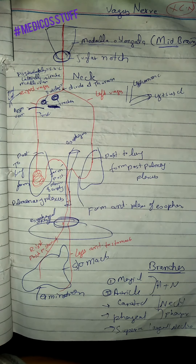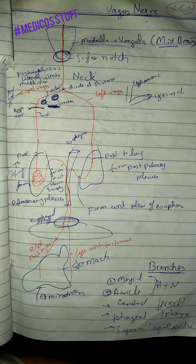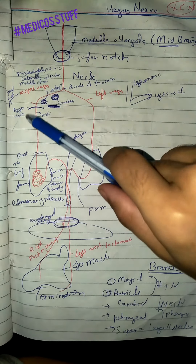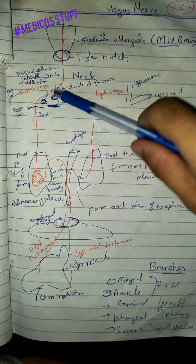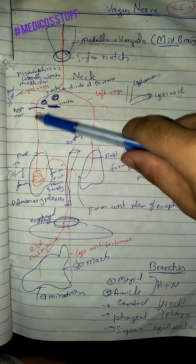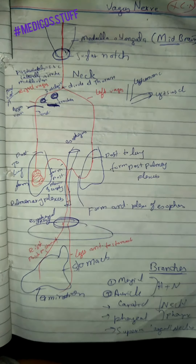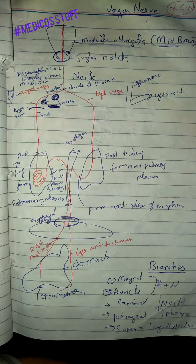At the level of the thorax, it divides into the right and the left vagus nerve. The right vagus nerve has the subclavian artery posteriorly, the trachea laterally, and the azygos vein in the middle. It then comes down and runs at the posterior surface of the right lung.